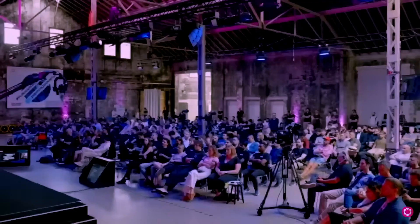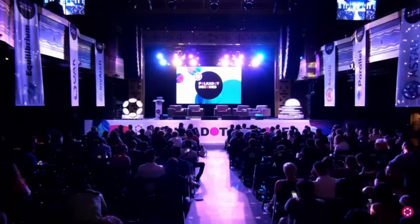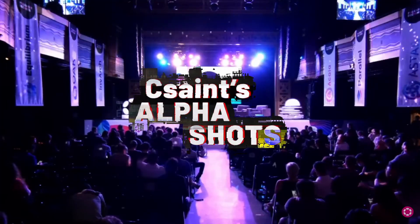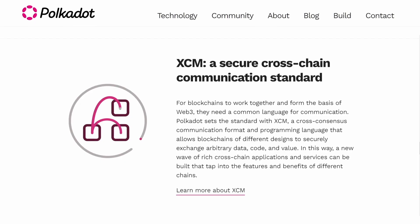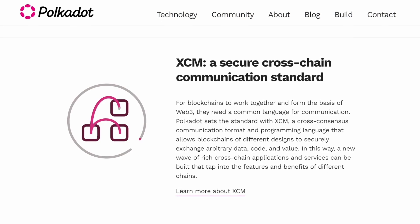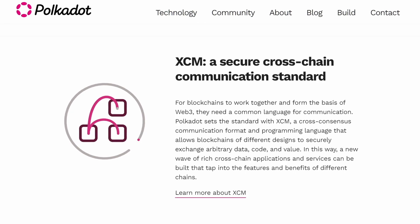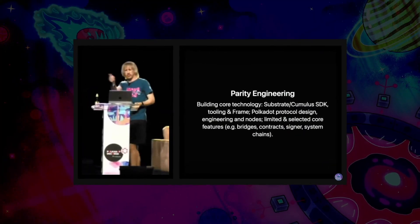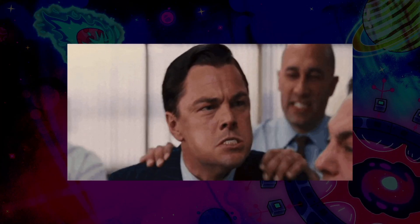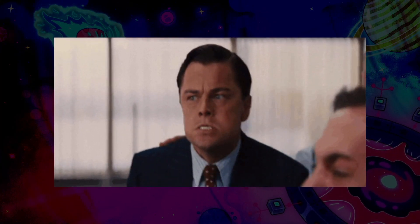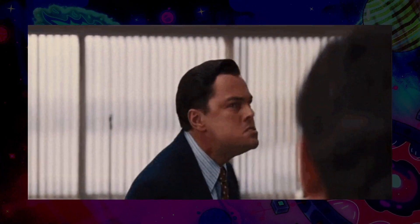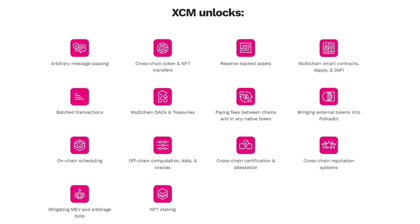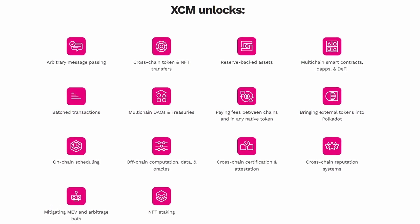Get ready to load up on some alpha today as we dive right into part two of Gavin Wood's talk on XCM, the secure language that connects Polkadot parachains. In part one we broke down Gav's rationale behind Parity's role in developing Polkadot and listened to his rallying cry for the ecosystem. Today we get into the details of XCM and what's to come in the upcoming iterations of Dot-Sama's secure messaging language.